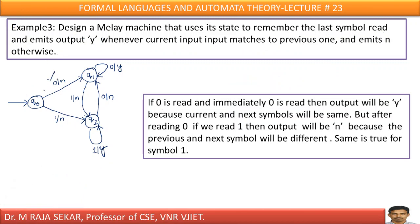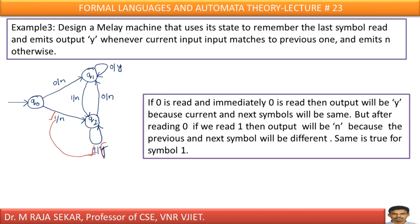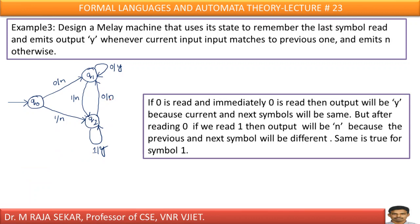Just see: if I read zero for the first time, since we have not read any other symbol before, I print N. After reading zero, if I read zero again, this zero and the previous zero are matching, so I must give output Y. Similarly, if I read one for the first time, I must print N because there was no previous one. If previous symbol matches current symbol, I must print Y; otherwise I must print N. On state Q1, if the input is zero and the previous was one, they are not matching — print N.